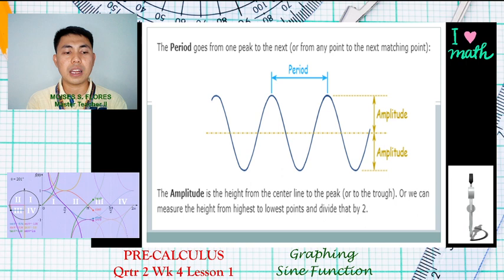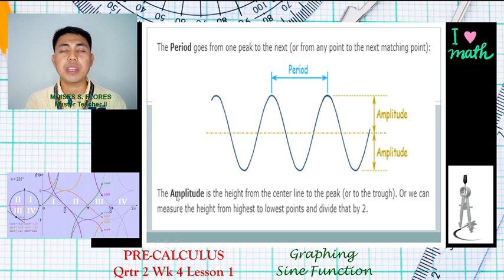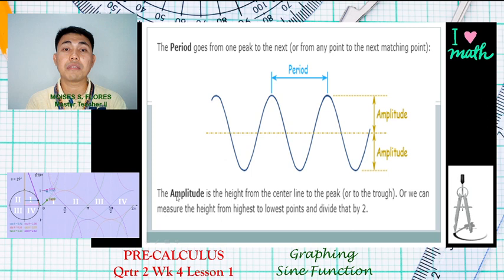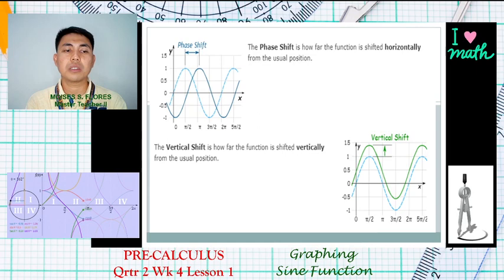If the absolute value of b is greater than 1, the graph is shrunk horizontally. Now, amplitude is referred to as the height from the center line to the peak or the trough, or simply the height from the highest to the lowest point divided by 2. When the absolute value of a is less than 1, the graph is shrunk vertically. When the absolute value of a is greater than 1, the graph is stretched vertically.